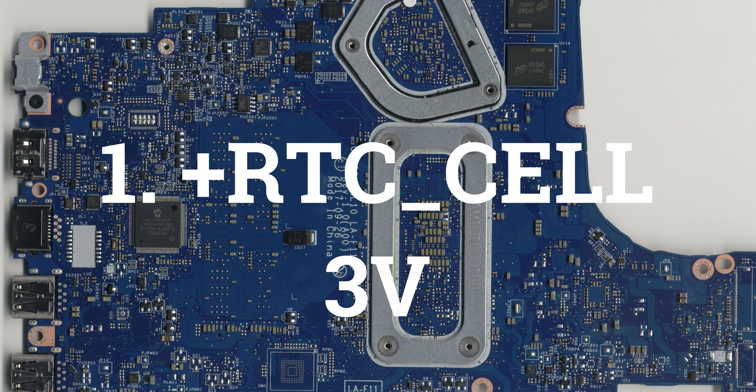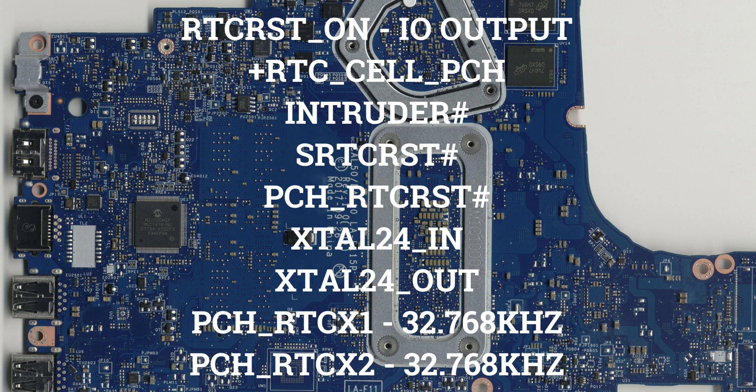The first power plane voltage is +RTC_CELL, usually 3 volts is available. Associated signals include: RTC_RST_ON (output from IO), +RTC_CELL_PCH, INTRUDER#, SRTC_RST#, PCH_RTC_RST#, XTIL_24IN, XTIL_24OUT, PCH_RTC_X1 (32.768 kHz crystal input), and PCH_RTC_X2 (32.768 kHz crystal output). These all belong to the PCH power supply — the RTC section is the first active block for the PCH.